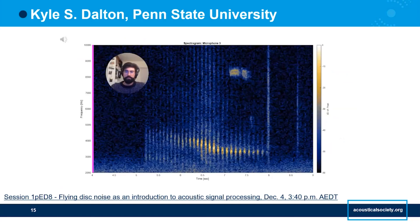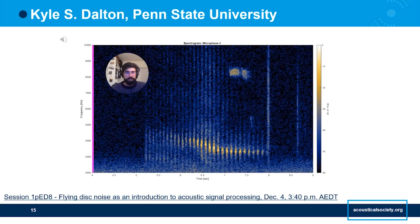Now let's take a look at some flying disc data. This graphic is called a spectrogram, and it's a tool used a lot in acoustic signal processing. It helps visualize what frequencies are present in a recording and how those frequencies change over time. On this spectrogram, yellow and white areas indicate that there is more sound present at that frequency at that time. You'll hear the disc whistle by, and then hear two thuds as the disc hits the ground.